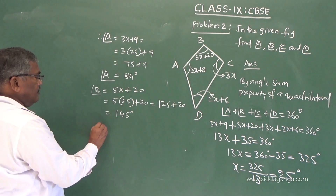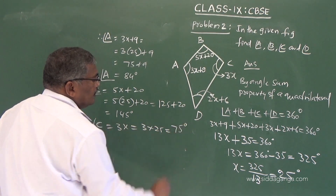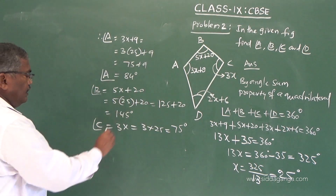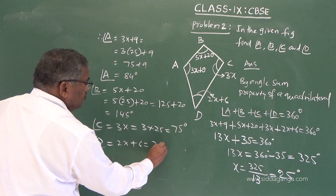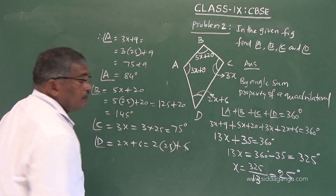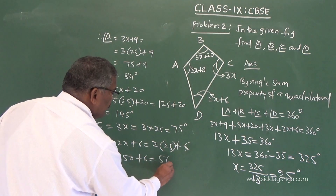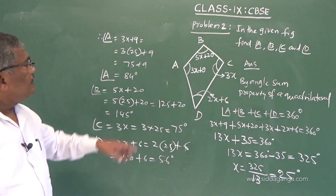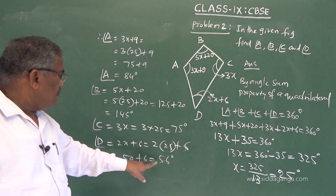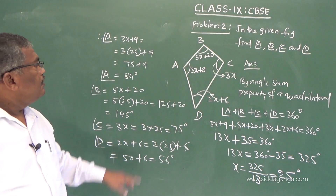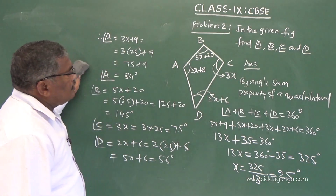Angle C is 3x, which is 3 into 25, equals 75 degrees. Angle D equals 2x plus 6, which is 2 into 25 plus 6, giving 50 plus 6 equals 56 degrees. As a check, if you add all four angles, they should sum to 360 degrees.